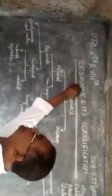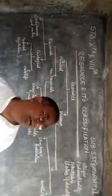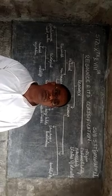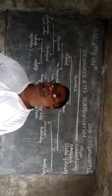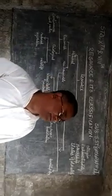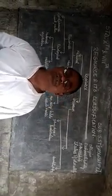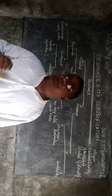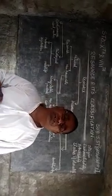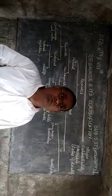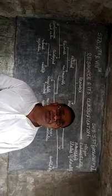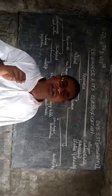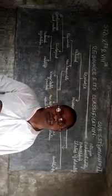First of all, resources. The term 'resources' is derived from the Latin words 're' and 'sources'. 'Re' means which is used again and again, and 'sources' means the substances, the materials, the goods which are used for the well-being of human society. So goods or substances which are used again and again by human societies are considered as resources.